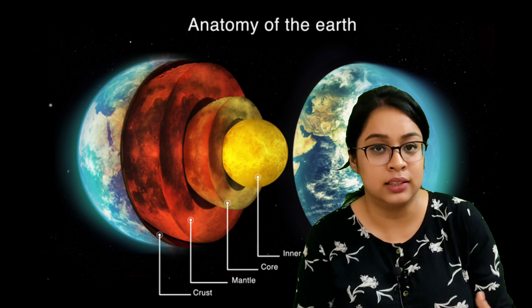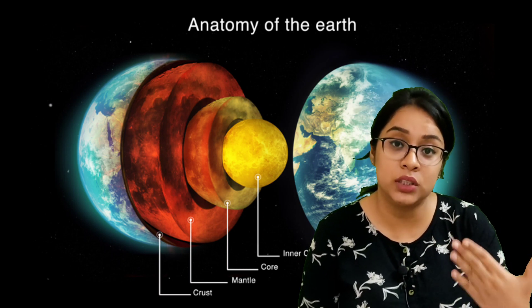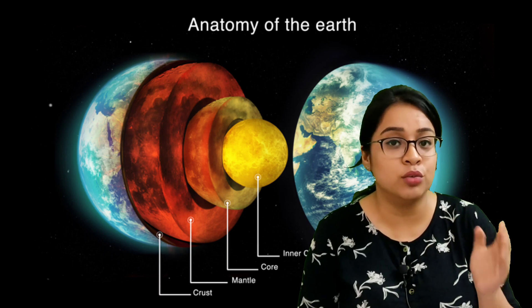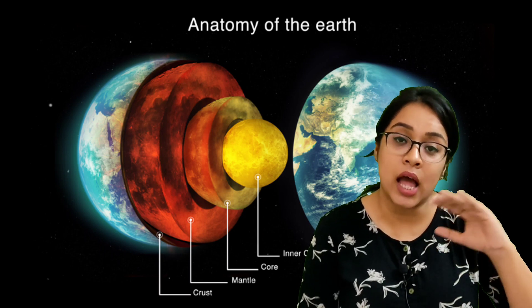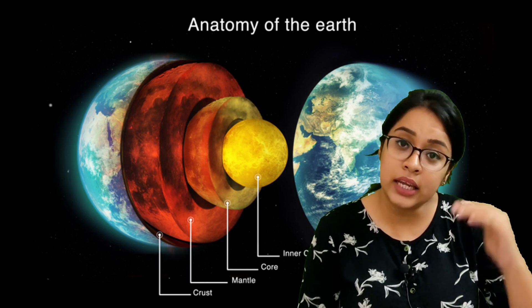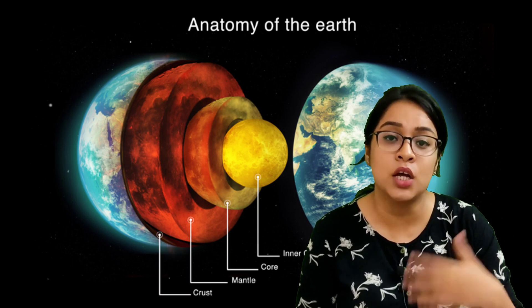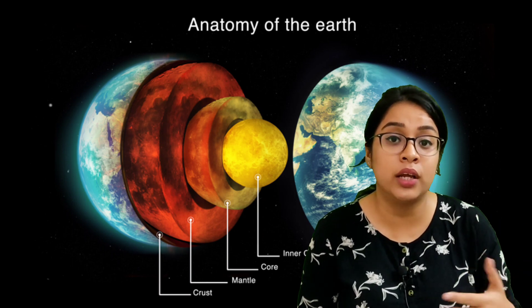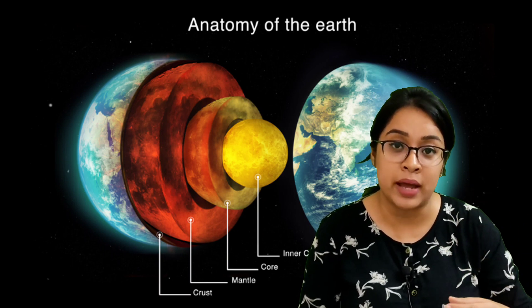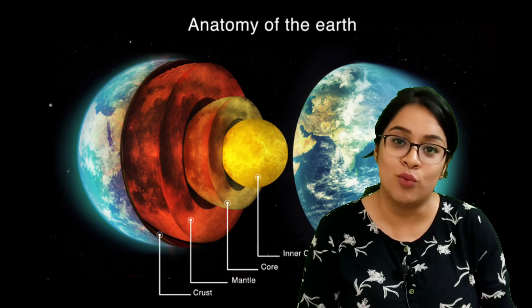Next is mantle. Mantle is sandwiched between the core and the crust. It is around 2900 km thick. The outer surface of the mantle is solid rock and the inner surface of the mantle is the molten rock. During a volcanic eruption, the molten rocks from the mantle comes out through the volcanoes.